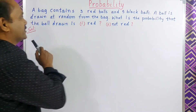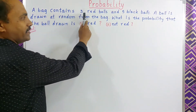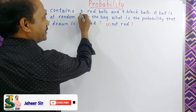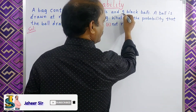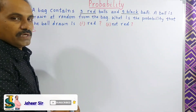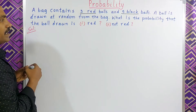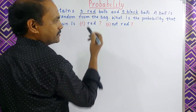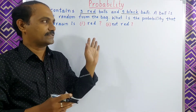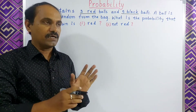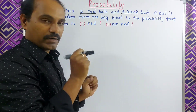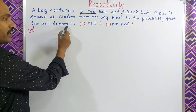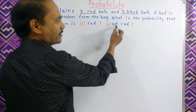Look at the question — what is given in the question. A bag contains 3 red balls and 5 black balls. A ball is drawn at random from the bag without seeing it. What is the probability that the ball drawn is red, or not red?